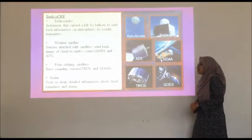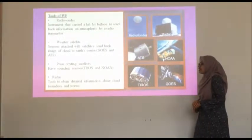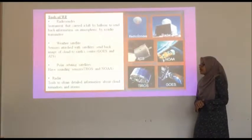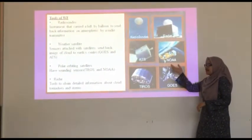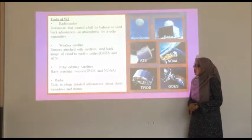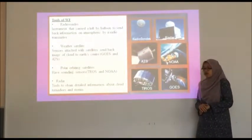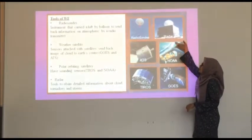Third, we have polar orbiting satellite with surrounding sensors. They have two types: TIROS and NOAA. And lastly, radar. Radar is a tool to obtain detailed information about clouds, tornadoes and storms. Here is the picture of radar.